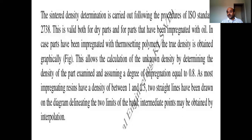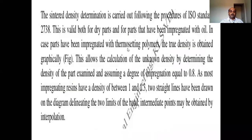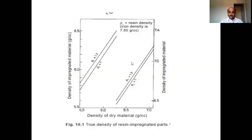The graph represents the true density of sintered products impregnated with thermosetting polymers, showing the density of dry material in grams per cc versus the density of impregnated material in grams per cc. Two straight lines are drawn on the diagonal, deviating the two limits of the band, with intermediate points obtained by the impregnation. This procedure is valid for both dry products and products impregnated with oil.